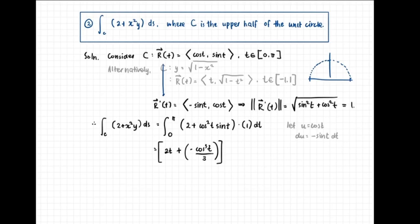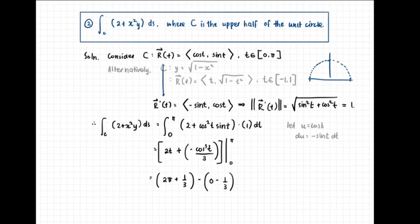Evaluating from t equals 0 to t equals pi: at t equals pi, we get 2pi minus (cosine pi) cubed over 3. Cosine pi is negative 1, its cube is negative 1, so negative of negative 1 over 3 is positive 1 third. At t equals 0, we get 0 minus cosine 0 cubed over 3, which is negative 1 third. Combining: 2pi plus 1 third minus negative 1 third equals 2pi plus 2 thirds. This is our final answer.